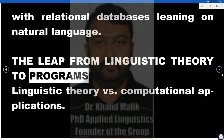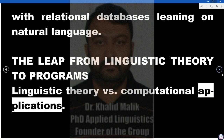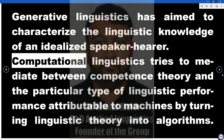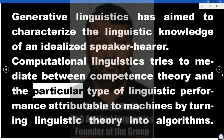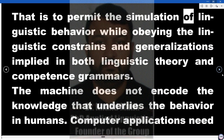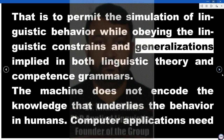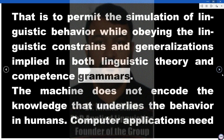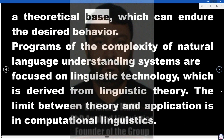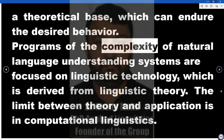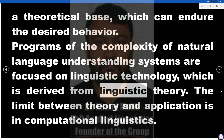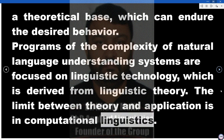The Leap from Linguistic Theory to Programs: Linguistic Theory vs. Computational Applications. Generative linguistics has aimed to characterize the linguistic knowledge of an idealized speaker-hearer. Computational linguistics tries to mediate between competence theory and the particular type of linguistic performance attributable to machines by turning linguistic theory into algorithms — that is, to permit the simulation of linguistic behavior while obeying the linguistic constraints and generalizations implied in both linguistic theory and competence grammars. The machine does not encode the knowledge that underlies the behavior in humans. Computer applications need a theoretical base which can produce the desired behavior. Programs of the complexity of natural language understanding systems are focused on linguistic technology derived from linguistic theory. The limit between theory and application is in computational linguistics.